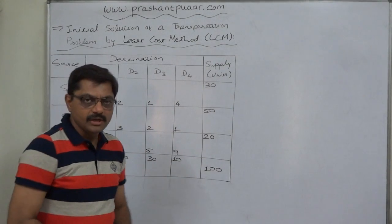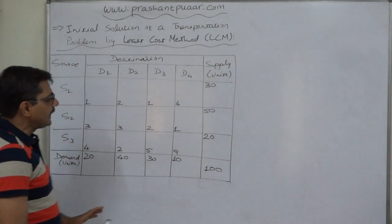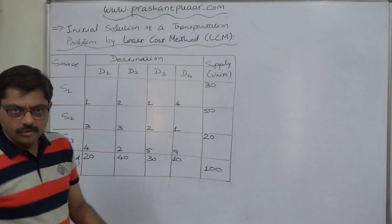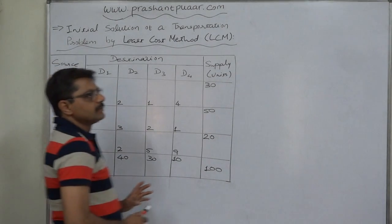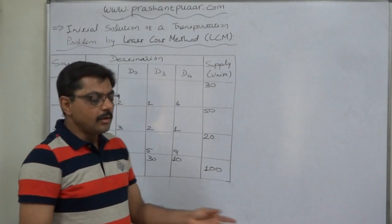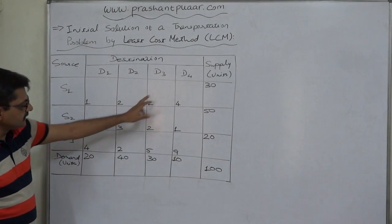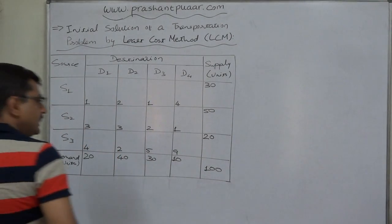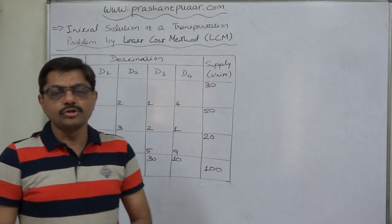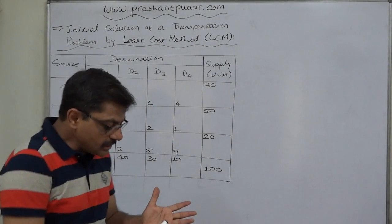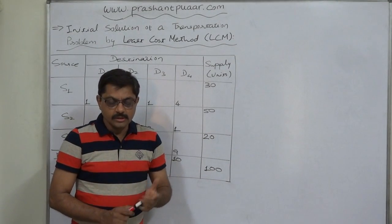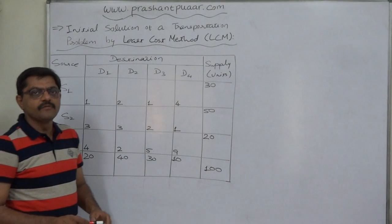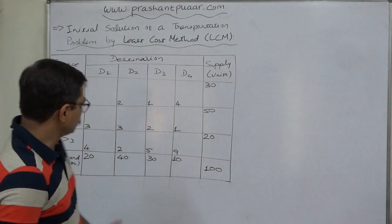The least cost method is directly relevant to the objective. At the time of making an allocation, we simply select the empty cell with the lowest cost — no geographical location matters. Now, the lowest cost in this table is 1, and there are three cells with cost 1. Since we can only allocate to one cell at a time, we need a tiebreaker: the cell with the highest possible quantity of allocation should be selected.